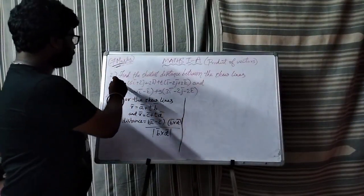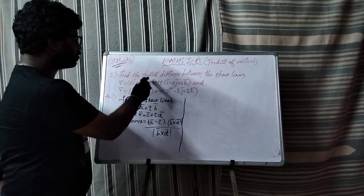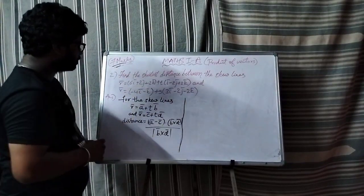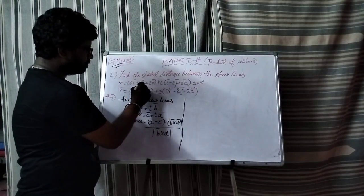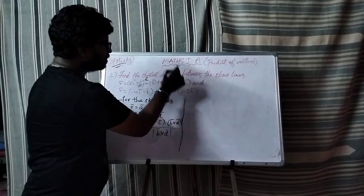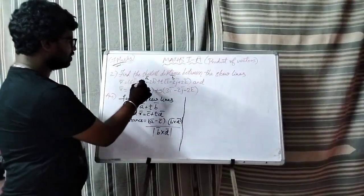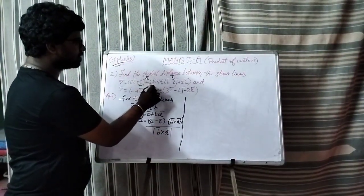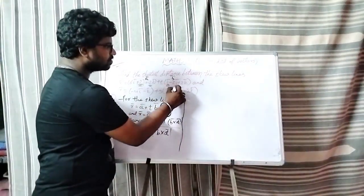Now the second question: find the shortest distance between skew lines. Skew lines are r bar is equal to a bar plus t into b bar. Here a bar is equal to 6i plus 2j plus 2k, and b bar is equal to i minus 2j plus 2k.